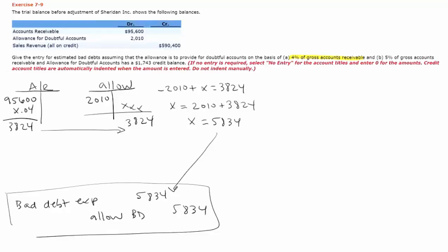Now part B changes the scenario and now says assume you're going to use 5% of gross receivable and the allowance has a credit balance. So I'm going to set up my accounts receivable stays the same, but I'm going to set up a new allowance account. And now the allowance account has a credit balance of $1,743 to begin with.